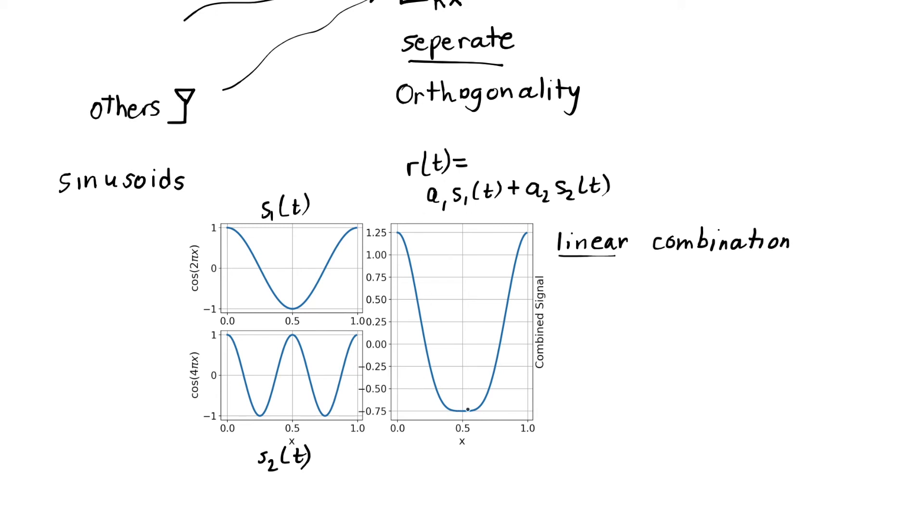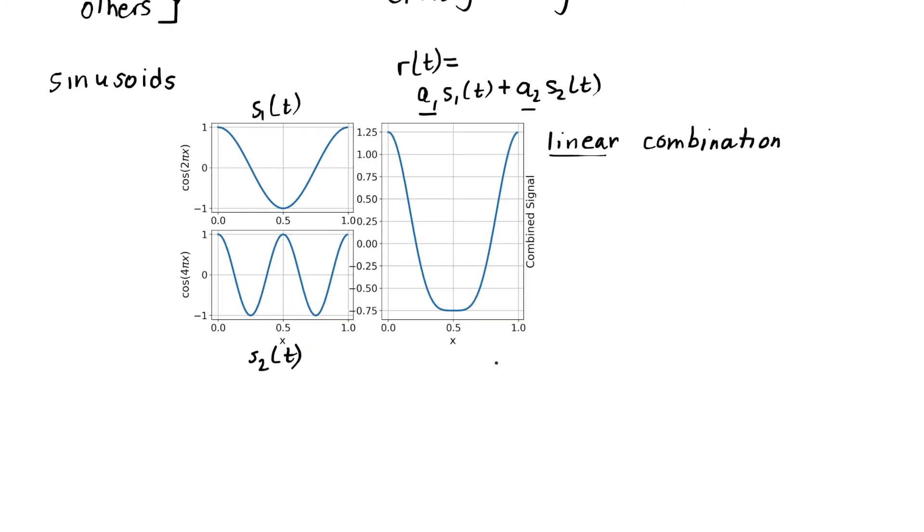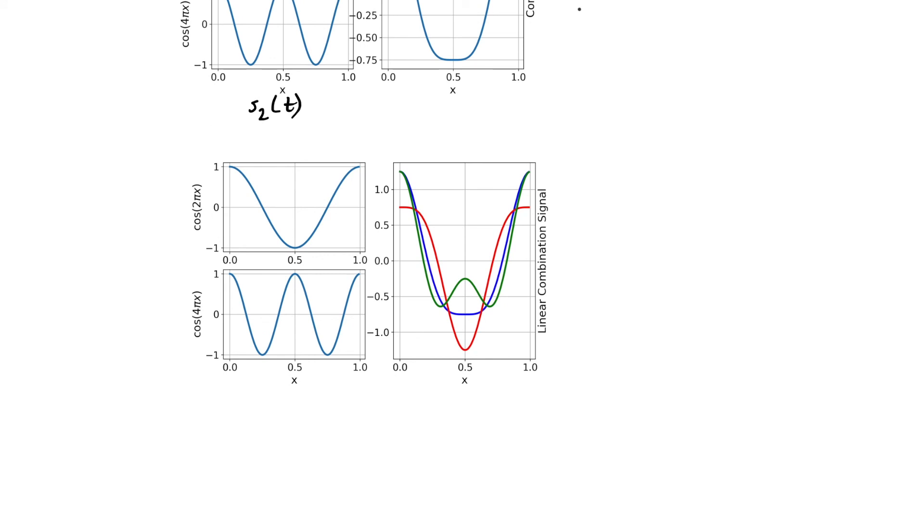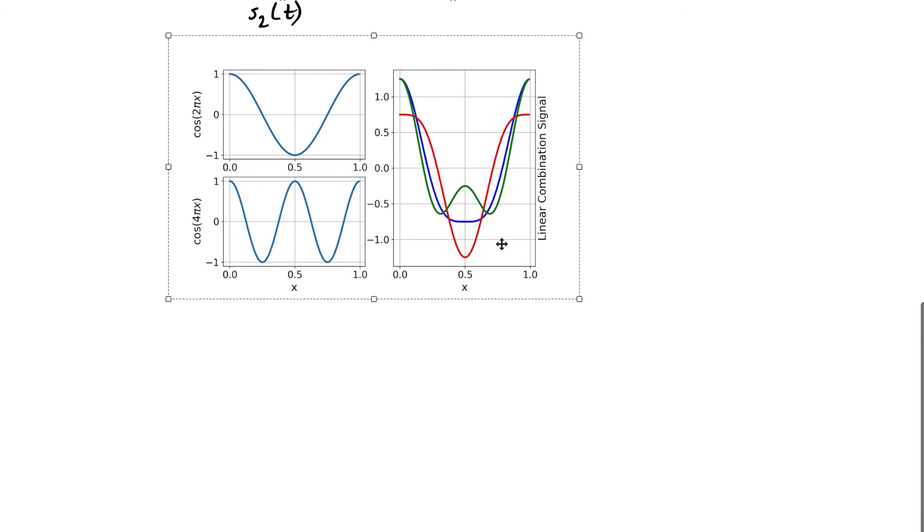The question becomes, is how do we allow these signals to be designed such that they can be separated from the combined signal? Once they're separated, we can figure out what a1 and a2 were. We might have lots of different linear combinations that are possible. As another example, same two signals s1 and s2 of t, but now we've got three different linear combinations. These are three different sets of values a1 and a2 and the sum of them plotted on this right side of the figure.